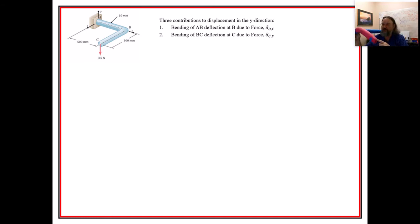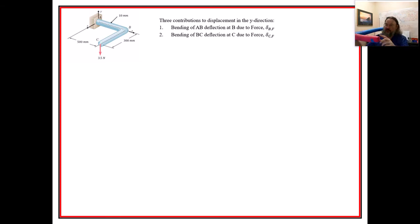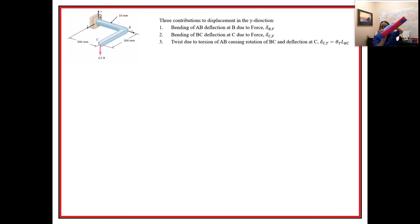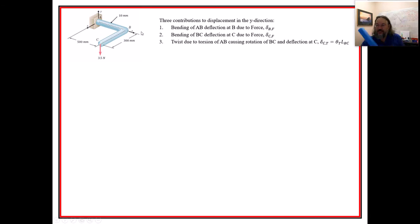The second contribution is the bending deflection of BC on its own — its base has already moved because AB bent down, and now BC bends down further. The third, less intuitive one: the base of BC is going to twist, and because it twists, the end comes down, giving an angular deflection contribution.